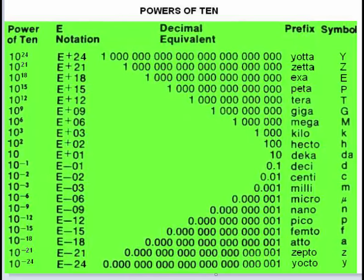The prefix is part of a word used in the metric system, which we'll cover in another video, and then there's the symbol for that prefix. But in this video, we're going to focus on scientific notation and the magnitude of the exponential component.